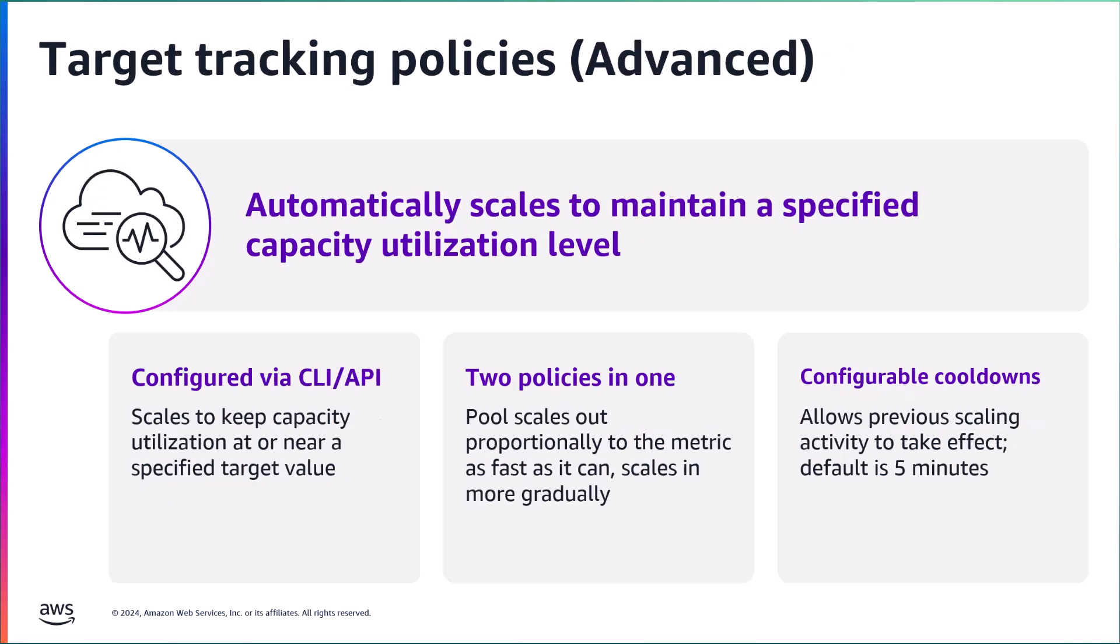Target tracking policies are the last type of policy available for workspaces pools. This is an advanced policy type that is only configurable by the AWS CLI or APIs. This policy type combines scale in and scale out policies into a single policy. When you create a targeting tracking policy, application auto scaling automatically creates and manages CloudWatch alarms that trigger the scaling policy. The scaling policy then adds or removes capacity as required to keep capacity utilization at or close to the specified target value.